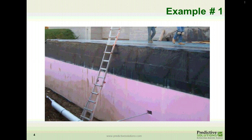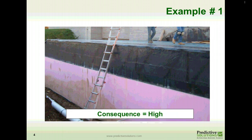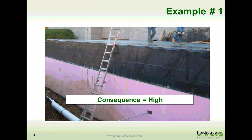Now let's look at an example. Here we have two workers exposed to a fall greater than six feet. First we determine the consequence — if they were to fall, worst case scenario, the injury would require hospitalization or worse. So the consequence would be high.